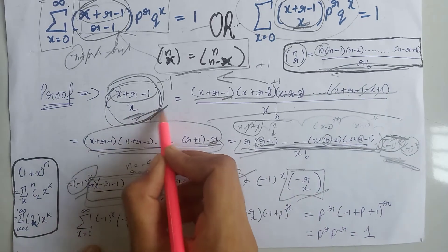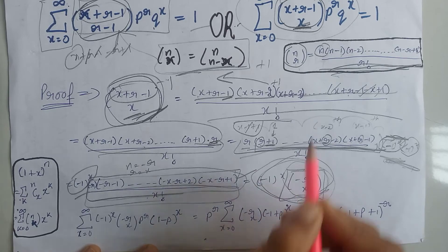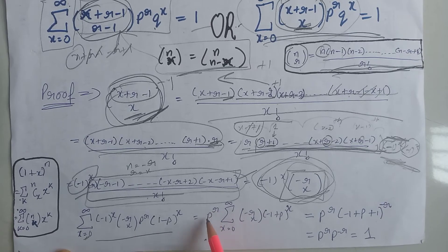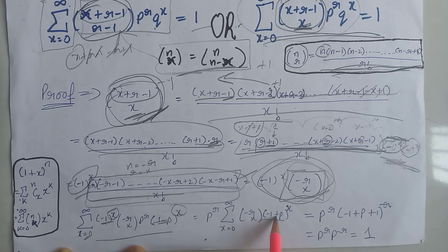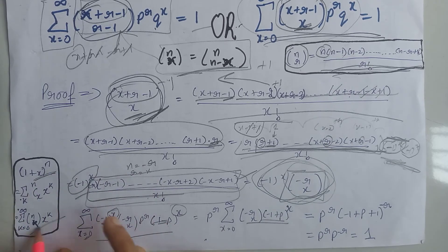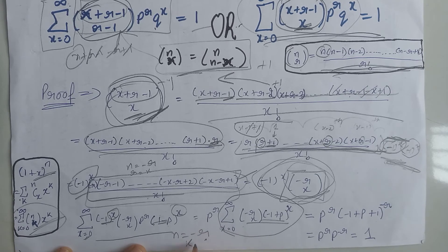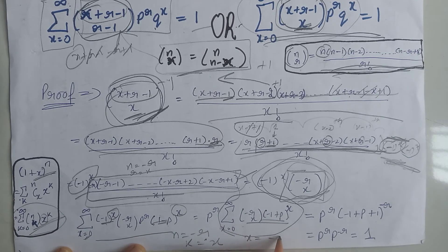This is just the value of the combination C(-r, x). We substitute this whole value into the PMF of the negative binomial distribution. Since p^r is independent of x, we write p^r outside the summation. Since the powers are the same, we multiply the bases and write (-1 + p)^x. We also use the binomial theorem expansion: comparing, n equals minus r, k equals x, and x equals minus 1 plus p.